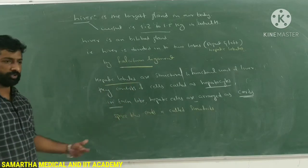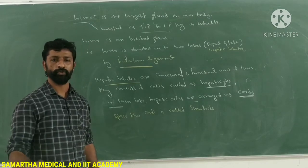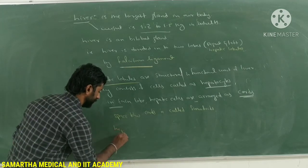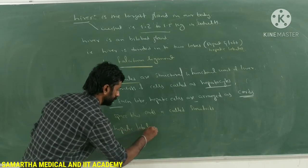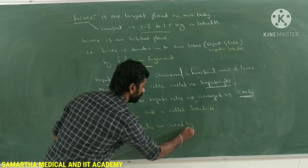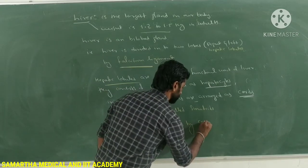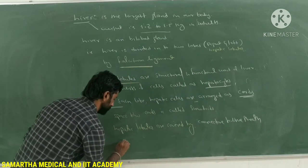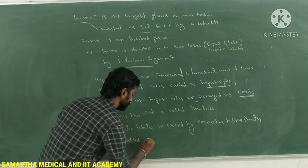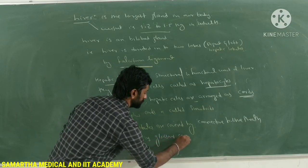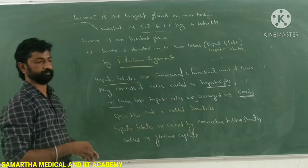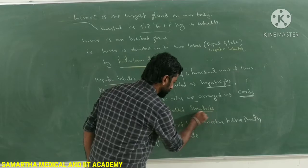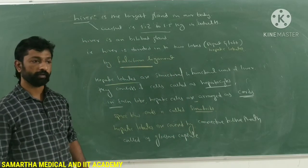The two hepatic lobules present in the liver are covered by a connective tissue sheath called the Glisson's capsule. In the sinusoids, you can also find specialized cells called Kupffer's cells.